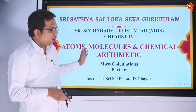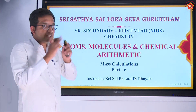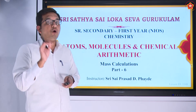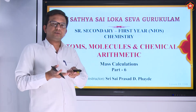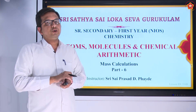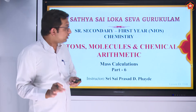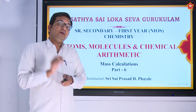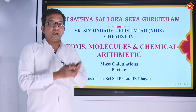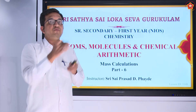Welcome back to the continuity of the chapter on atoms, molecules and chemical arithmetic. Having seen certain basic aspects, now we are going to get into the calculations involving various atoms which form molecules in nature. The basic prerequisite is understanding the periodic table — specifically, the atomic number and mass number of the first 20 elements, from hydrogen to calcium.